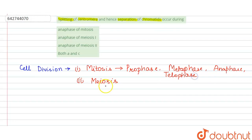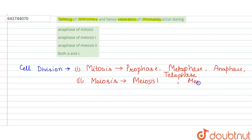Meiosis consists of two parts — meiosis one and meiosis two — and each also has all four phases: prophase, metaphase, anaphase, and telophase.